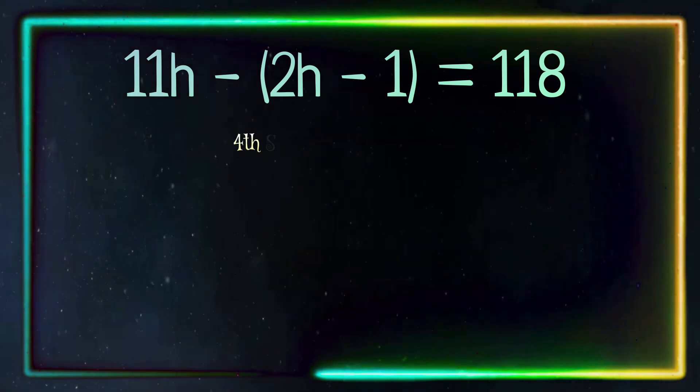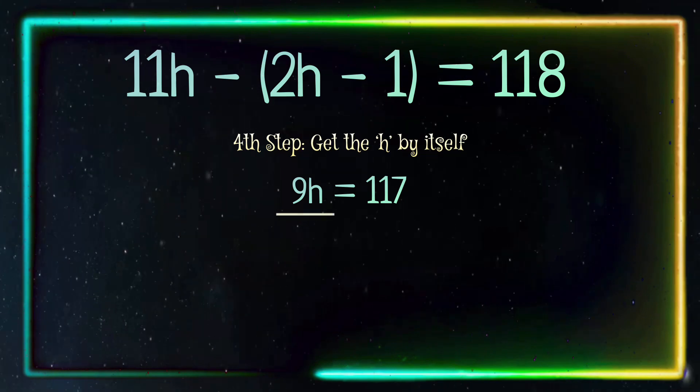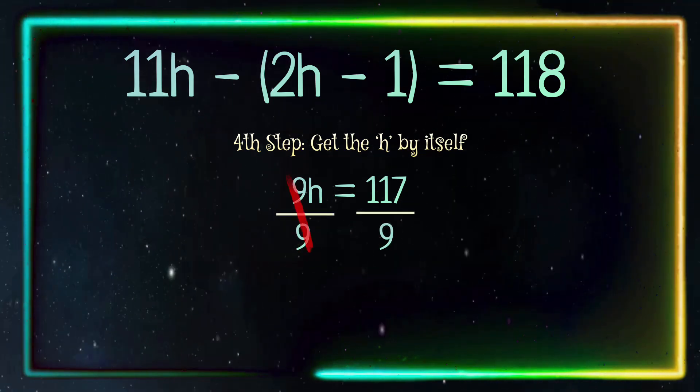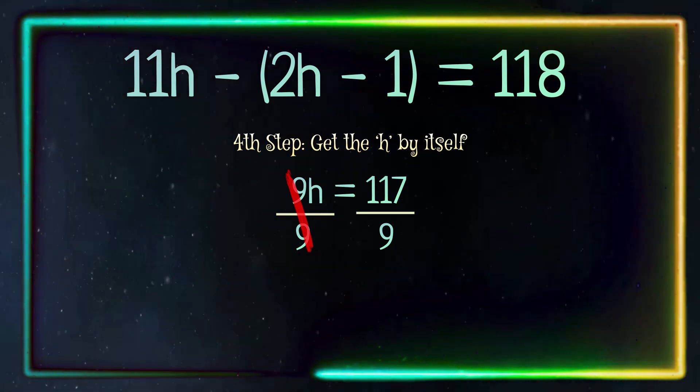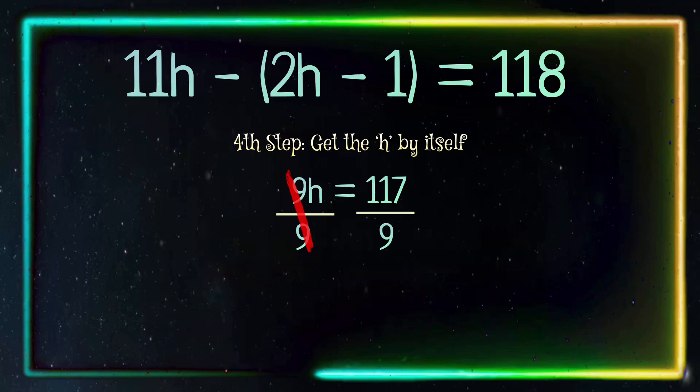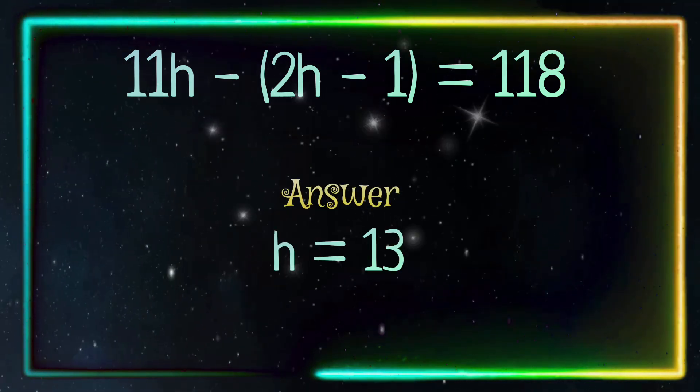Last step: we want to get h by itself, so we are going to divide both sides by 9. The 9 gets cancelled out, leaving h by itself. 117 divided by 9 equals 13, and there is our answer: h = 13.